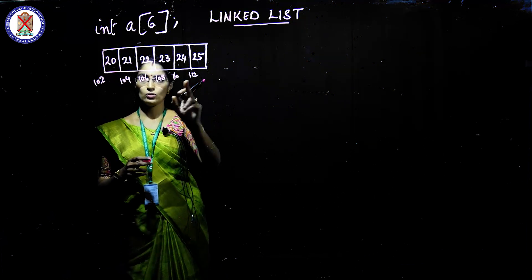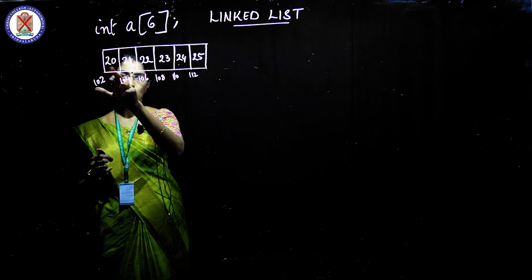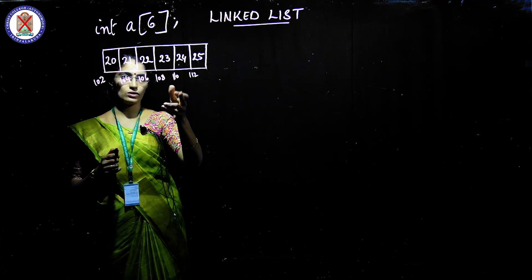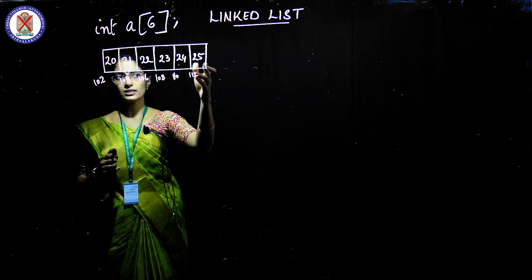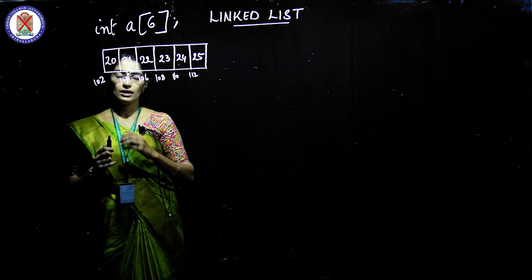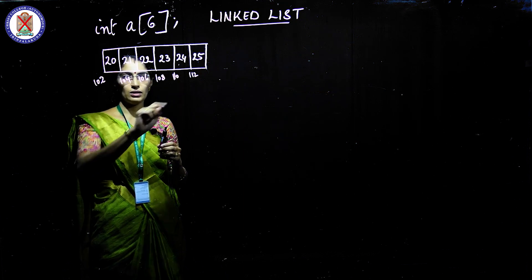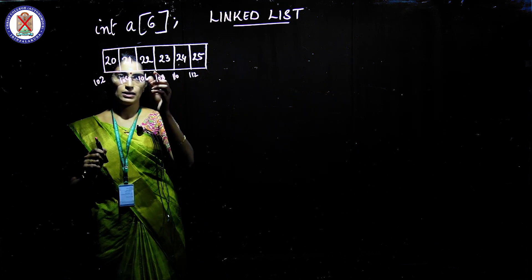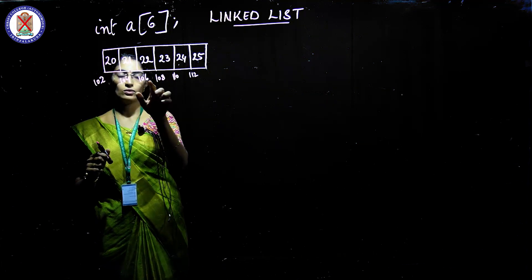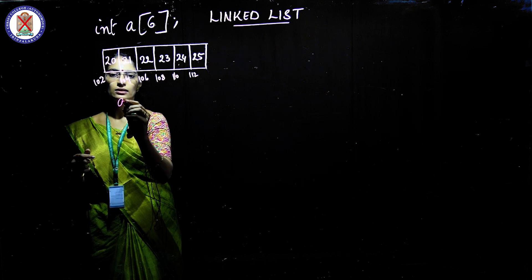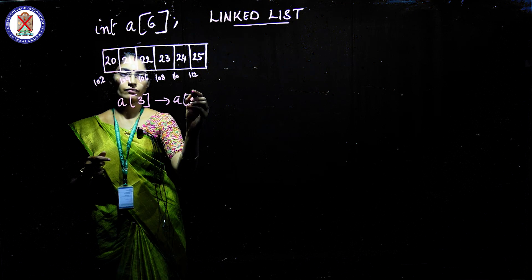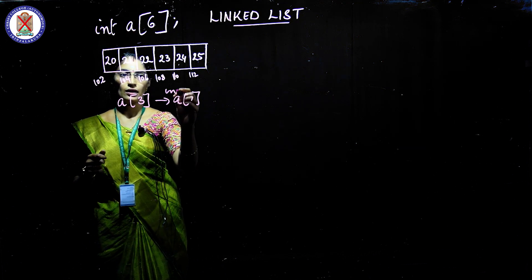So elements 20, 21, 22, 23, 24, and 25 are stored in these consecutive locations. In this array, I can randomly access any element. For example, if I want to access the third element, that is 22, I can go straight to it using a[3] if the index starts from a[1].